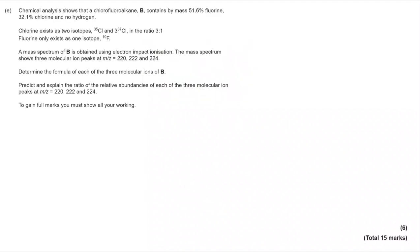That takes us finally to the sixth marker. Chemical analysis shows that a chlorofluoroalkane B contains by mass 51.6% of fluorine, 32.1% of chlorine and no hydrogen. Chlorine exists as two isotopes 35 and 37 in the ratio 3 to 1. Fluorine only exists as one isotope with a mass number of 19.